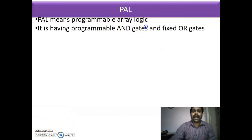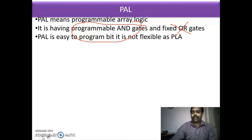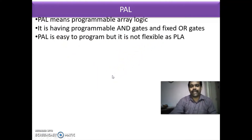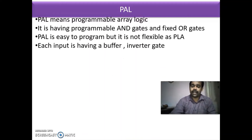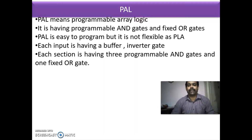In PAL, AND gates are programmable and OR gates are not programmable — they are fixed. PAL is easy to program but it is not as flexible as PLA. In PLA, both AND gates and OR gates are programmable. Each input has a buffer inverter gate, similar to PLA, so you get both the true form and complement form of the variable.